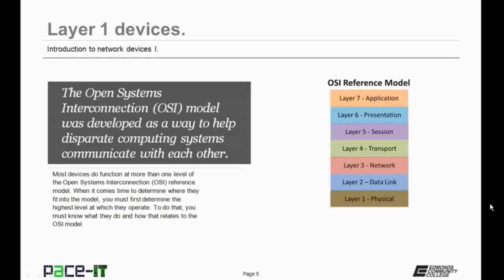We're going to be discussing the bottom three layers — layers 1, 2, and 3 today. Most devices do function at more than one layer of the OSI reference model. But when determining where they fit into the model, you must first determine the highest level at which they operate, because that's where they fit. To do that you must know what they do and how that relates to the OSI model.